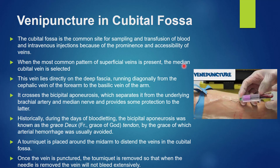When the most common pattern of superficial veins is present, the median cubital vein is selected for venipuncture. This vein lies directly on the deep fascia, running diagonally from the cephalic vein of the forearm to the basilic vein of the arm. It crosses the bicipital aponeurosis, which separates it from the underlying brachial artery and median nerve, providing some protection to them.